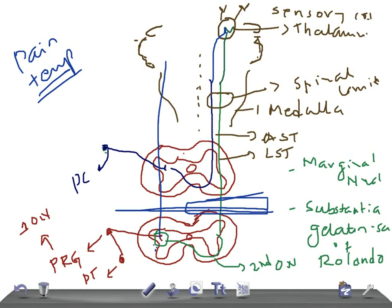Let me revise once again. The lateral spinothalamic tract carries pain and temperature. The first order neuron starts from the posterior root ganglion to the substantia gelatinosa or marginal nucleus. The second order neuron crosses on the same segment and ends at the thalamus. The third order neuron goes from the thalamus to the sensory cortex on the same side. Remember, they cross at the same segment. Thank you so much for watching — take care.